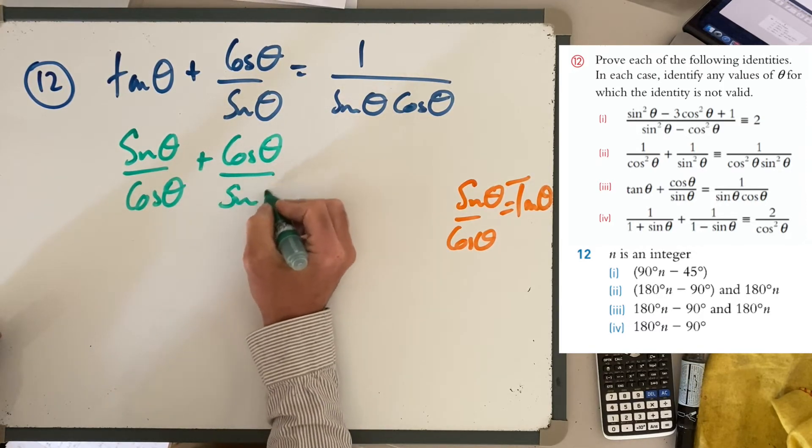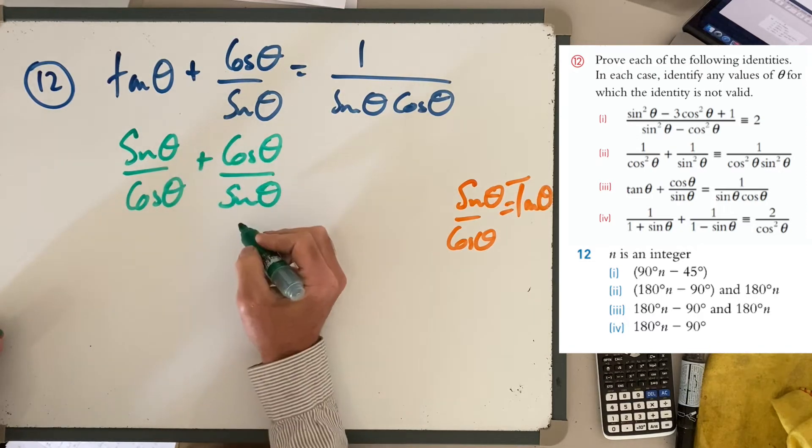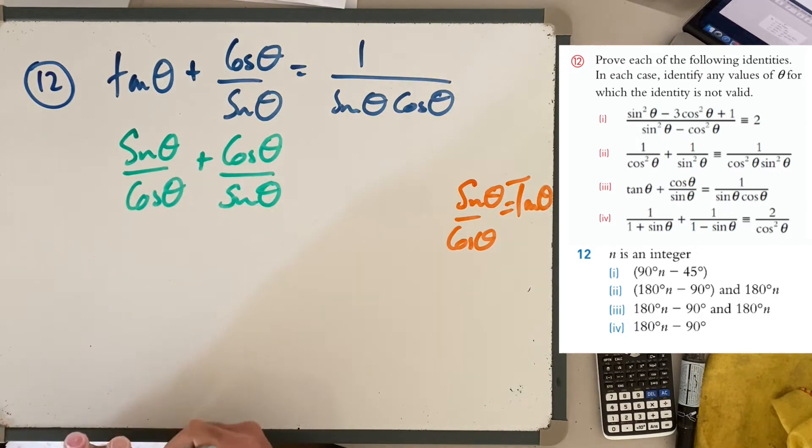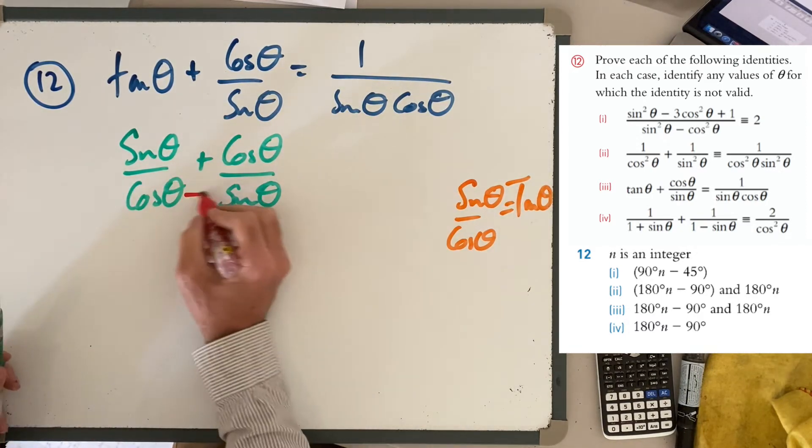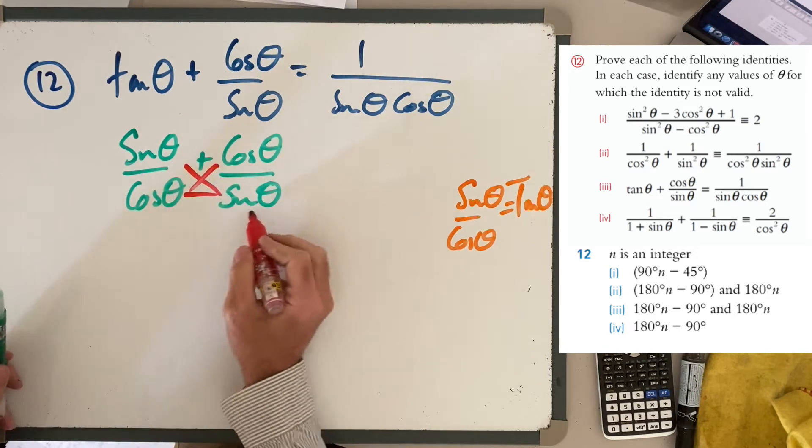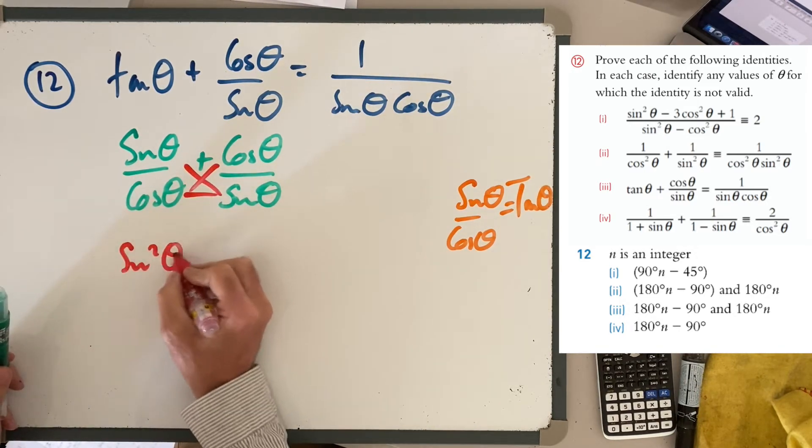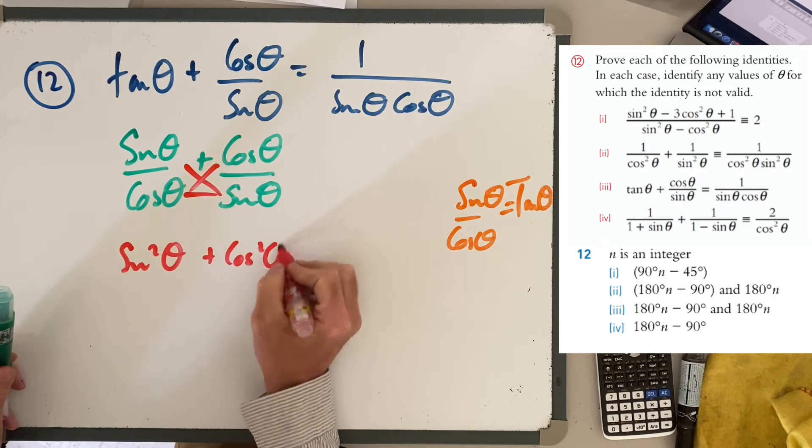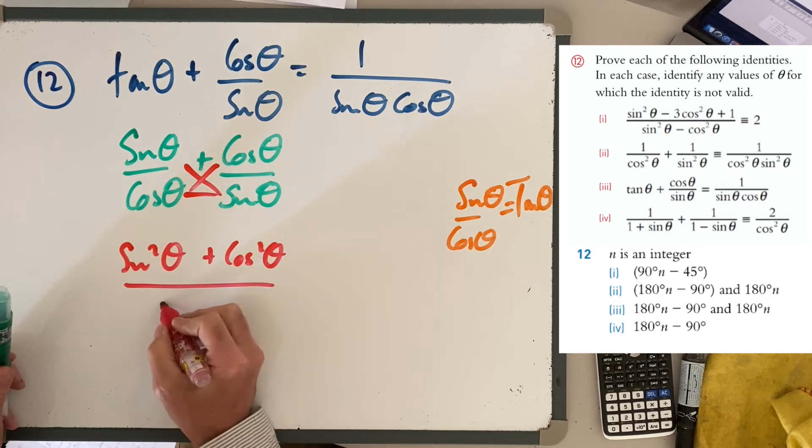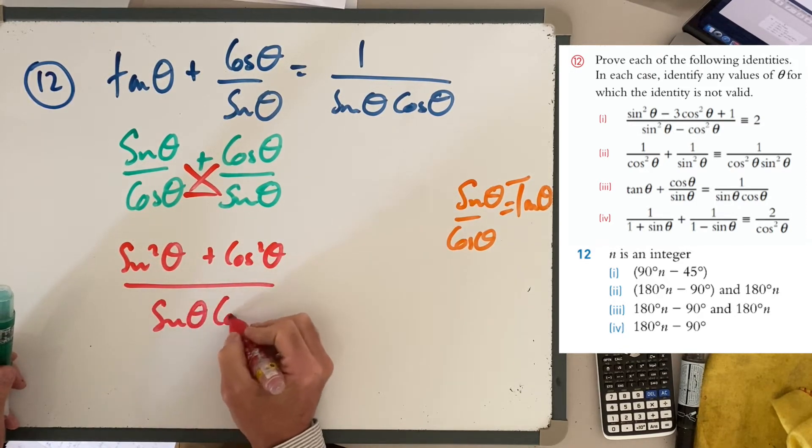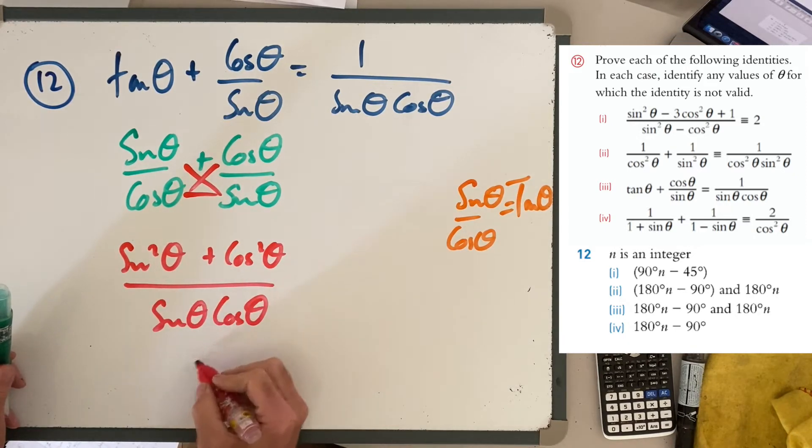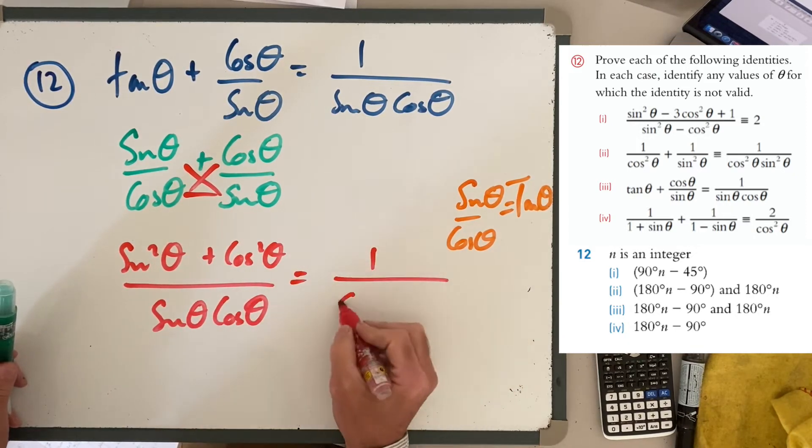I'm going to add the fractions together like I did in the previous question. So multiply those together and multiply those together, you get sin² θ + cos² θ all over sin θ cos θ, and that equals 1.